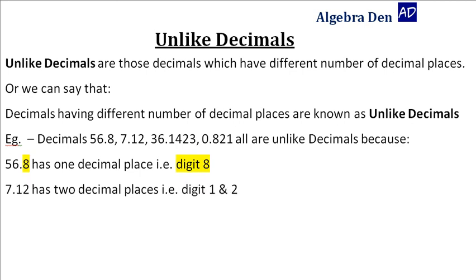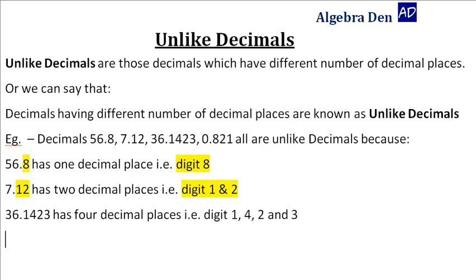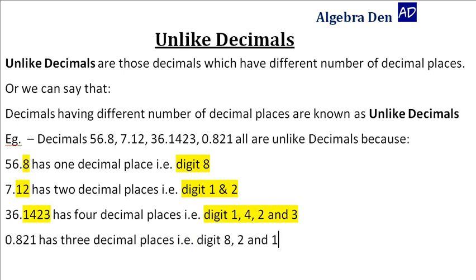7.12 has two decimal places, i.e. digit 1 and 2. 36.1423 has four decimal places, i.e. digit 1, 4, 2 and 3.